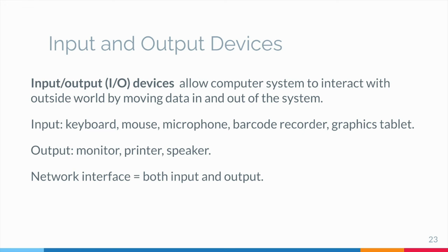I/O devices are directly connected to an electronic module attached to the motherboard called a device controller. For example, the speakers of a multimedia computer system are directly connected to a device controller called an audio card, which in turn is plugged into a bus on the motherboard. Sometimes secondary memory devices like the hard disk are called I/O devices because they move data in and out of main memory.